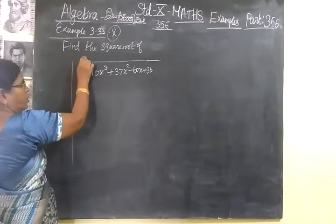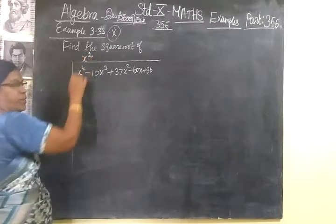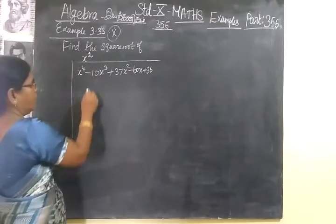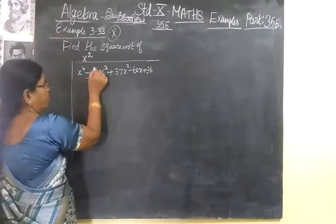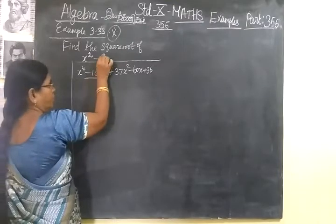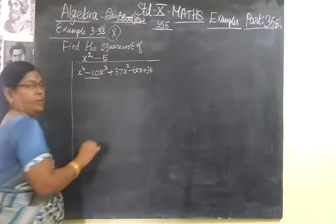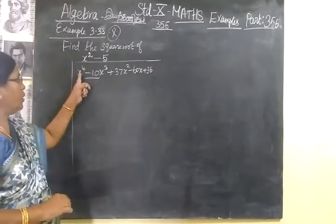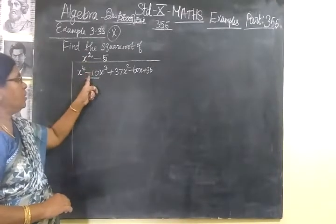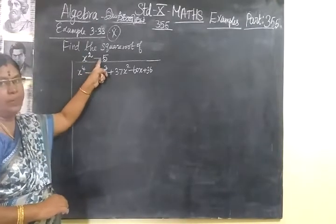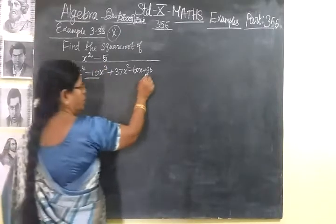This is x⁴ now. The power of x is 4, so take x². Then here -10x³ plus also is -5.